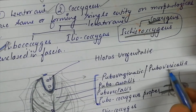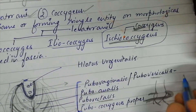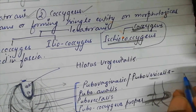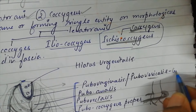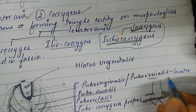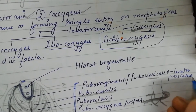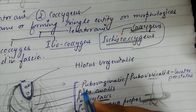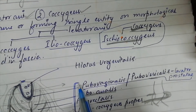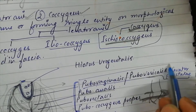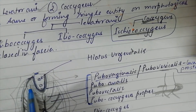Pubovaginalis or pubovesicalis forms a component that acts as a sling around the prostate, known as levator prostaticus. This is the pubococcygeus component of the Levator Ani.